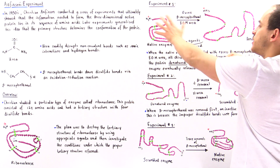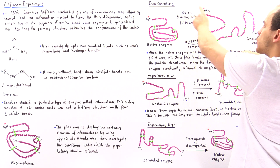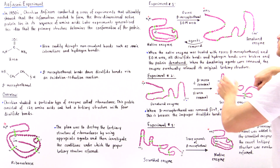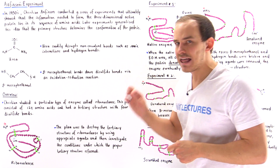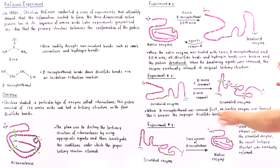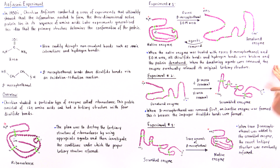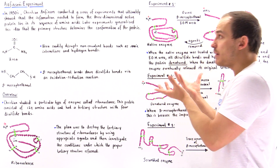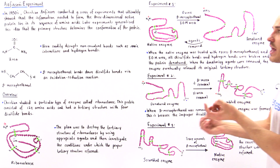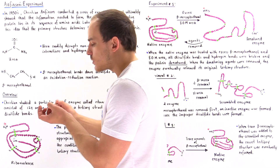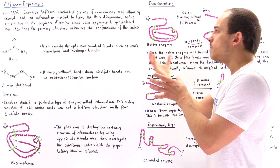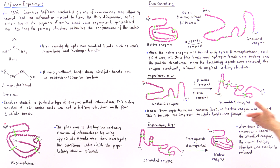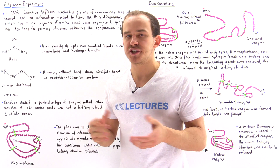So initially, placing the native enzyme with excess beta-mercaptoethanol and 8 molar urea caused denaturation. But when both denaturing agents were removed via dialysis using a semi-permeable membrane, the enzyme eventually reformed its original tertiary structure. This gives us evidence that it is the primary sequence — that specific sequence of amino acids — that essentially dictates the proper formation of the tertiary structure.